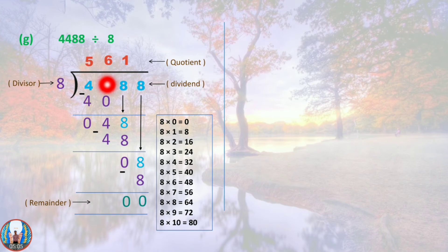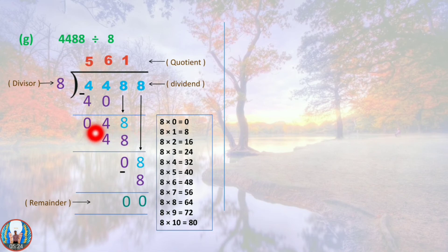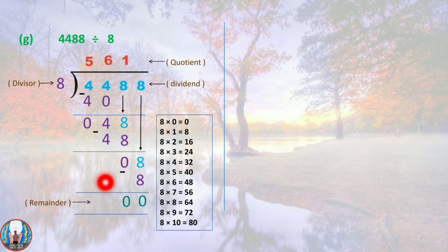Question G: 4488 divided by 8. Here 4488 is the dividend and 8 is the divisor. 44 falls between 40 and 48, so we take 40. 8 fives are 40. Then 8 sixes are 48; 48 minus 48 is 0. Bring down the 8. 8 ones are 8, so the remainder is 0.